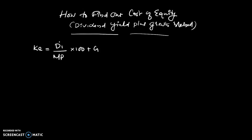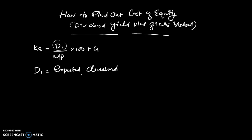Here we define D1. D1 is equal to expected dividend — that is, expected dividend per share at the end of the year.